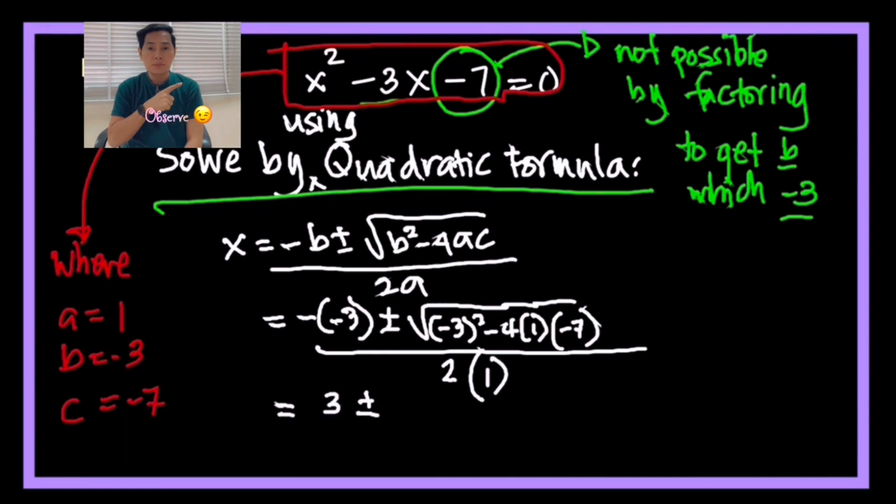Up next, that's negative negative. Remember algebraically, that becomes positive. And then we square negative also that becomes positive. And then negative 4 times 1 times negative 7, that becomes 28. And then over 2.